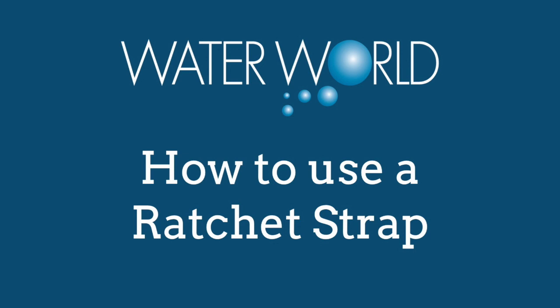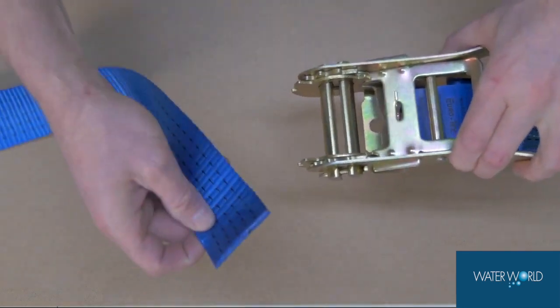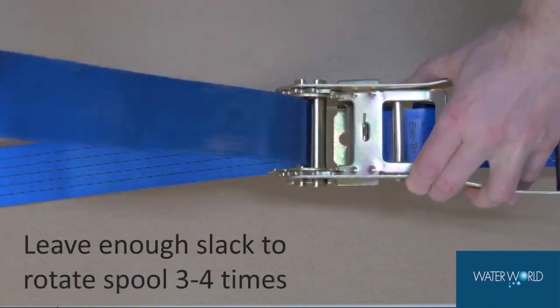How to use a ratchet strap. With the ratchet fully closed, thread the webbing through the slot in the centre spool of your ratchet and pull tight, removing the slack.